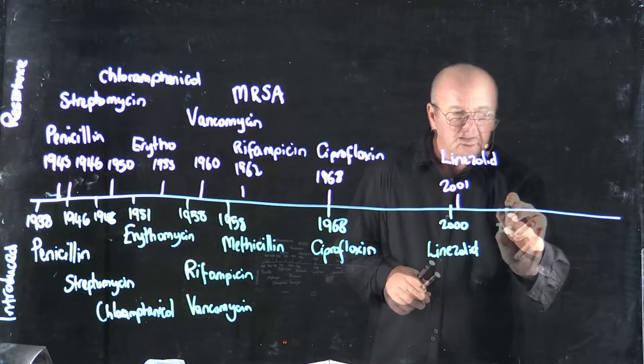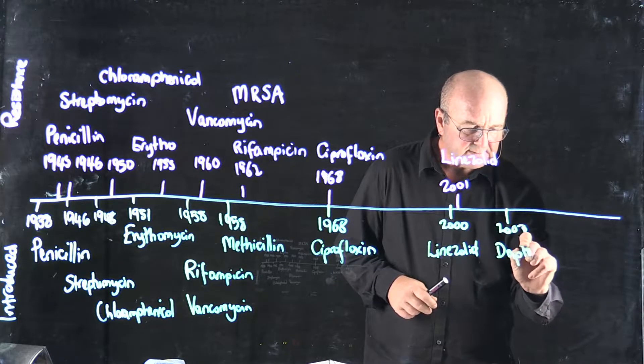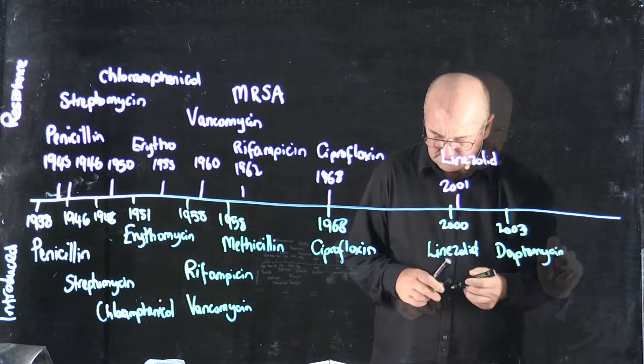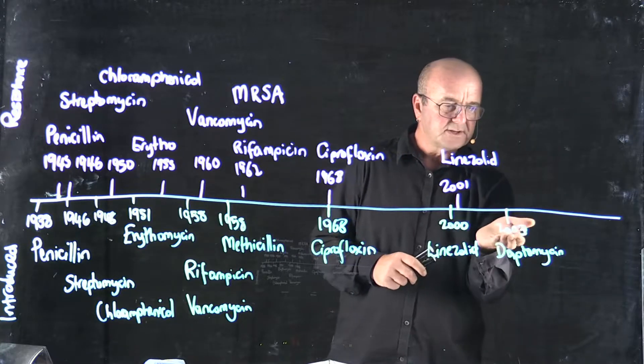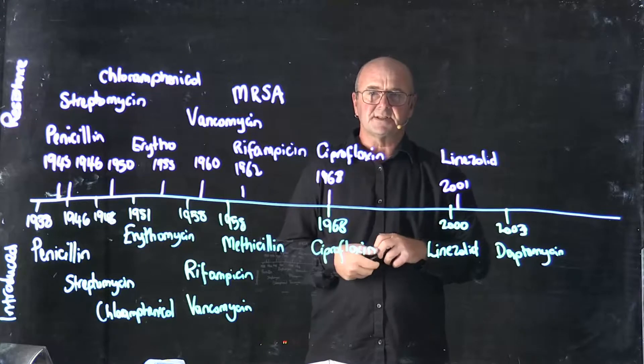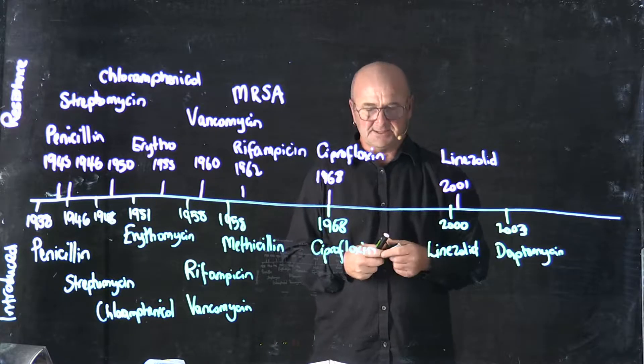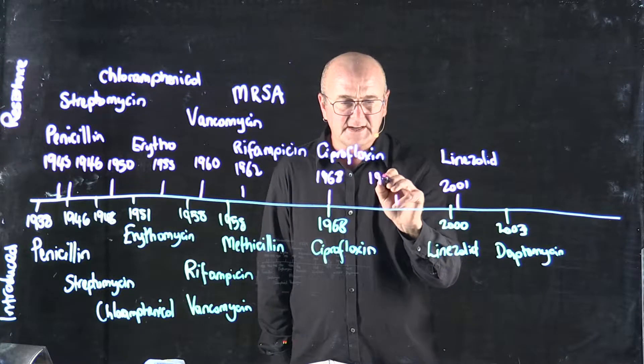2003. About the last antibiotic introduced. It's called daptomycin. 2003. And when was resistance to daptomycin discovered? It was introduced 15 years ago. Do you think we're lucky we still haven't found resistance to it? Yeah, no, sorry.